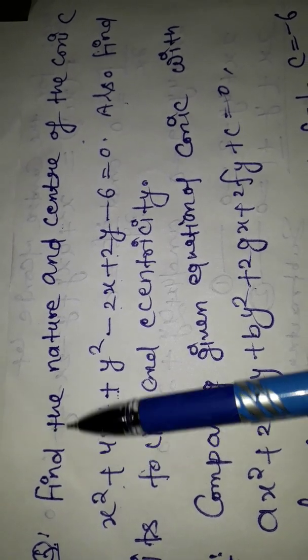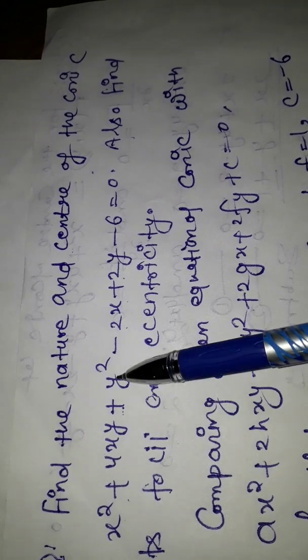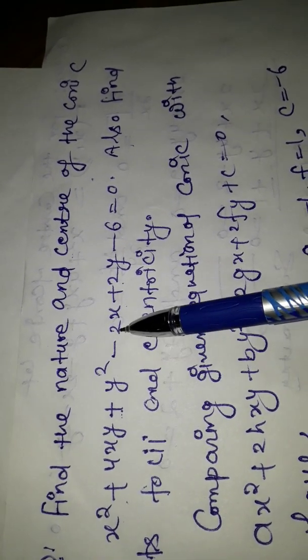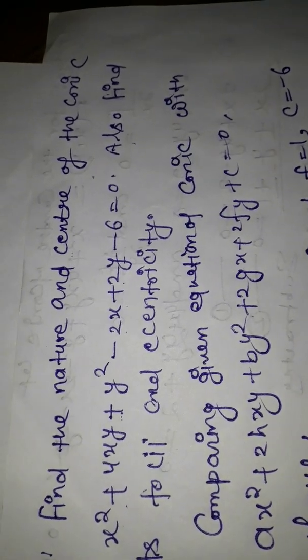In this video, we will find the center of the conic x² + 4xy + y² - 2x + 2y - 6 = 0.